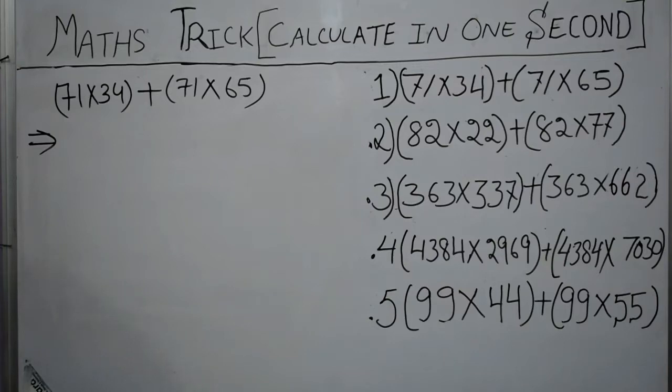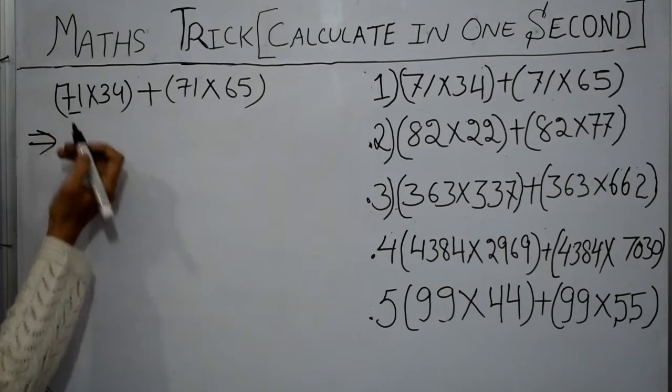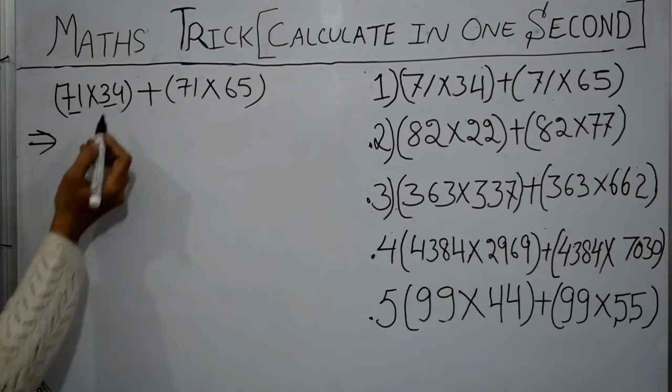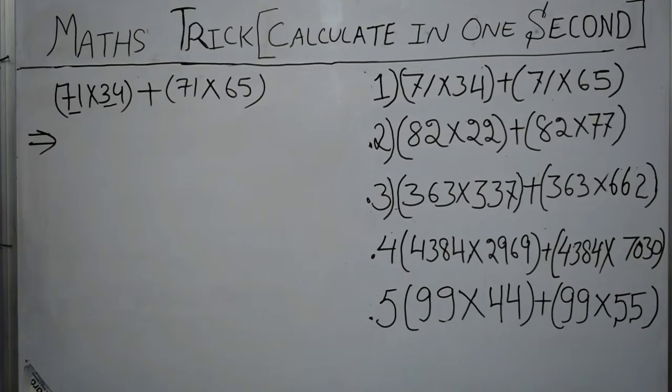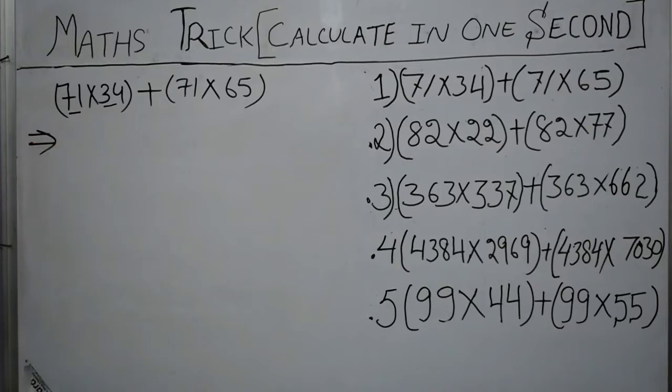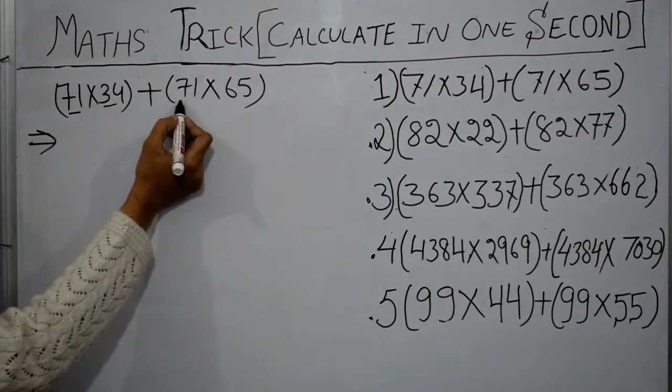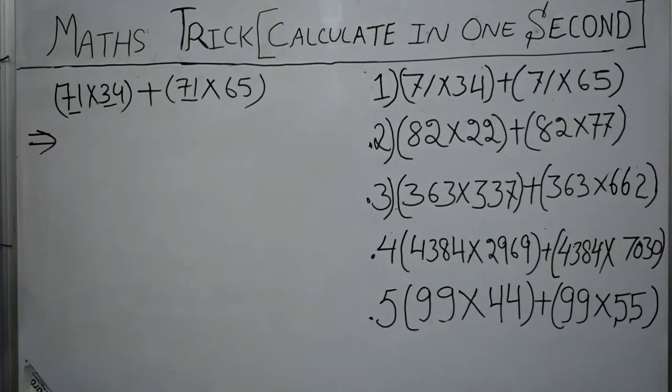Moving on to our first sum, you can see here 71 is multiplied by 34 and 71 is multiplied by 65. We can say 71 is our first number and 34 is our second number. We can see that in both these cases the first number is the same.